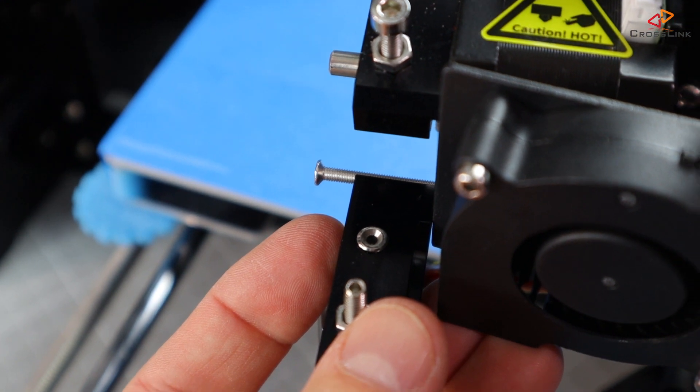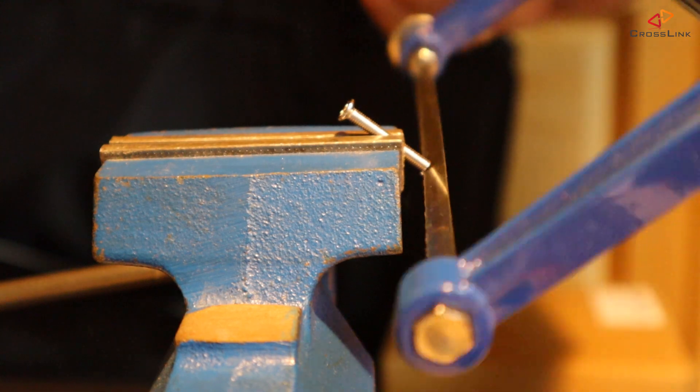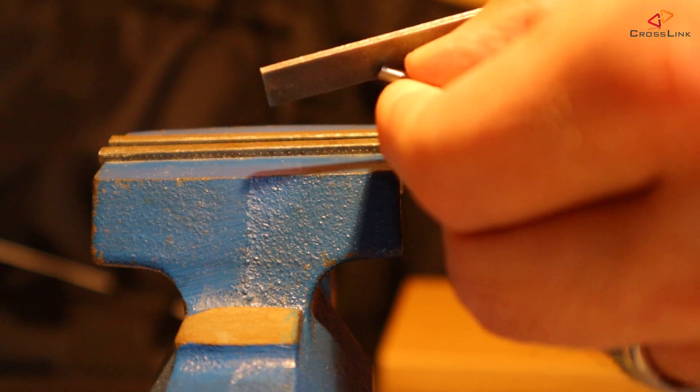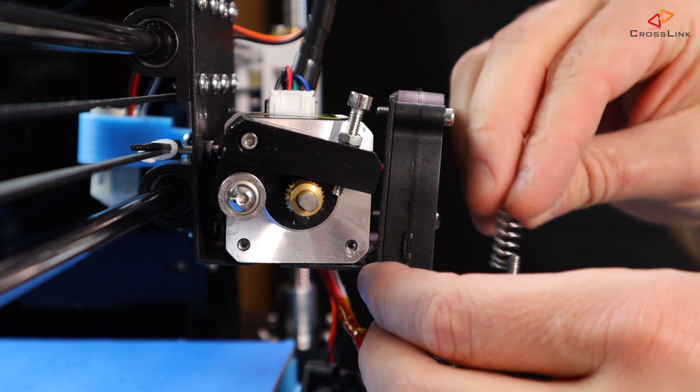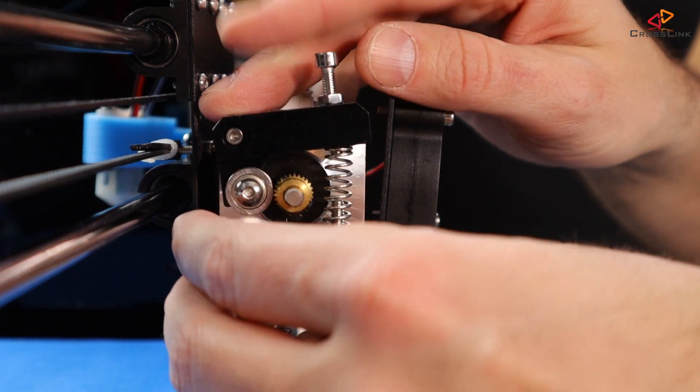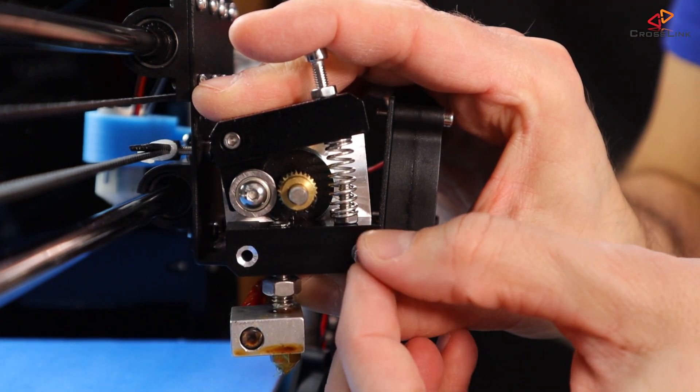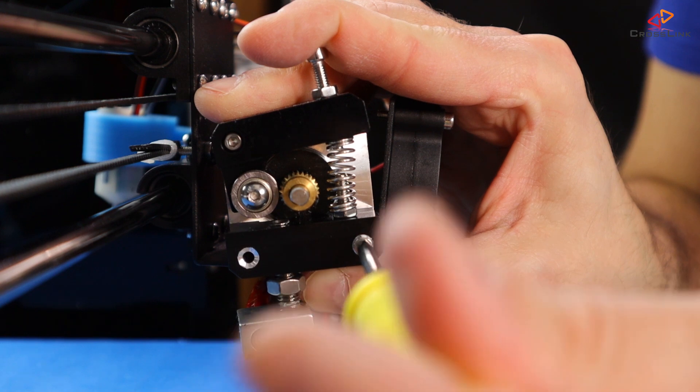If you want to use the M3 by 30mm screws to mount the block to the motor, cut them down by 10mm or use M3 by 20 screws instead. Put the tension spring back on and then fix the extruder block to the motor using the M3 by 20mm screws.